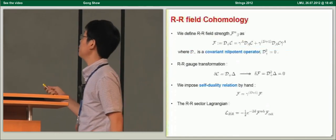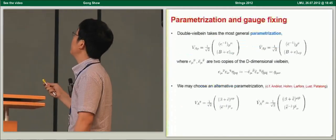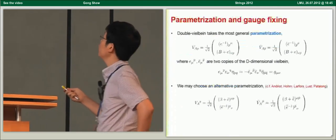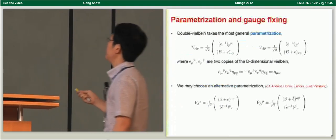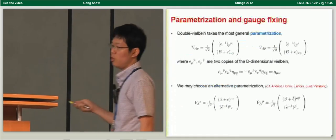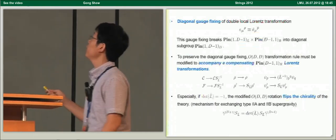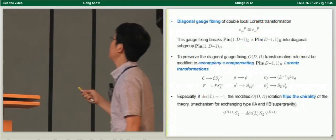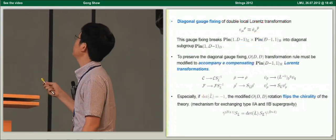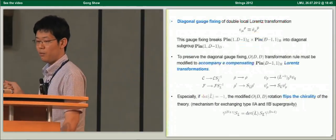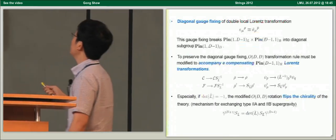The vielbein takes the most general parametrization, where E and E-bar are two copies of the two-dimensional vielbein giving the same metric. We may choose an alternative parametrization. To relate to ordinary supergravity, we should impose diagonal gauge fixing of the double Lorentz transformation, which identifies E and E-bar. This gauge fixing breaks the double local Lorentz transformation into the diagonal subgroup. To preserve the diagonal gauge fixing, the audit transformation rule must be modified to compensate for the local Lorentz transformation.